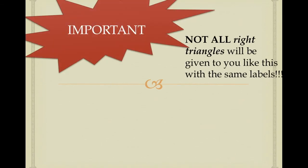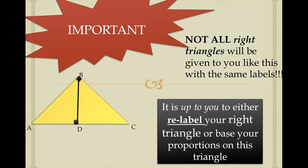Not all right triangles will be given to you with the same labels — you won't always get A, B, C, D. But what you will get is an altitude, so you can label the sides A, B, M, N, H, and the hypotenuse. I strongly suggest that you do. Also keep in mind that sometimes a triangle will be flipped and you'll be confused — don't be shy, flip your triangle so the right angle is pointing up, then label your A, B, M, N, H, and hypotenuse sides.